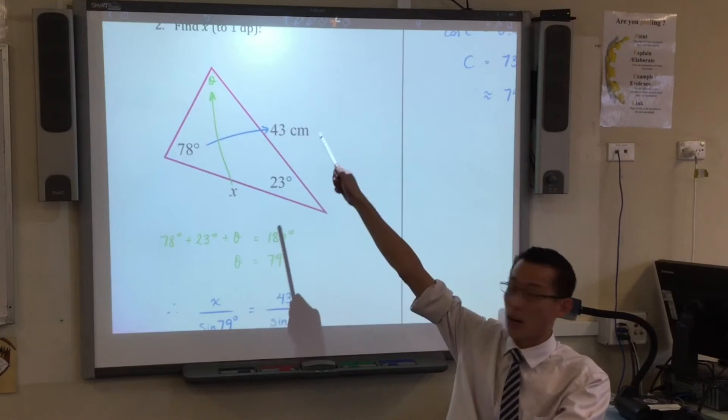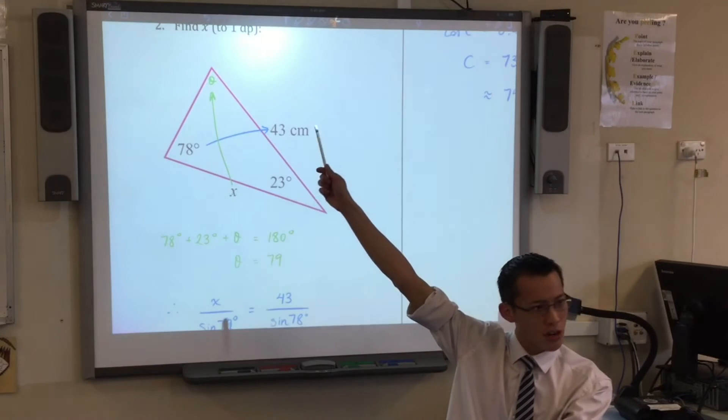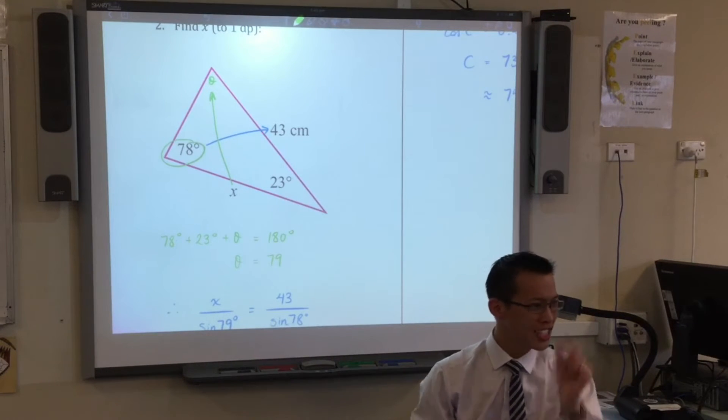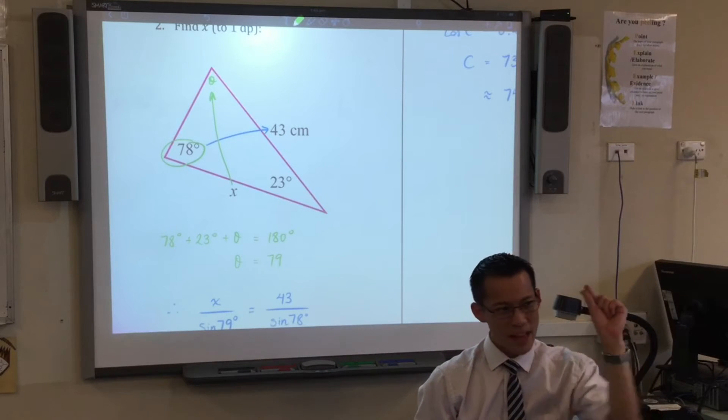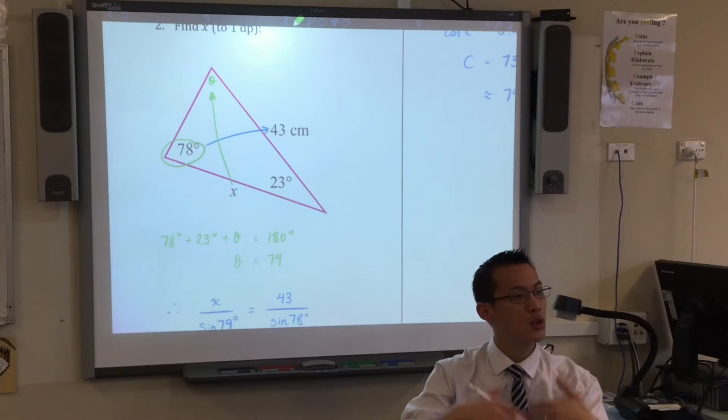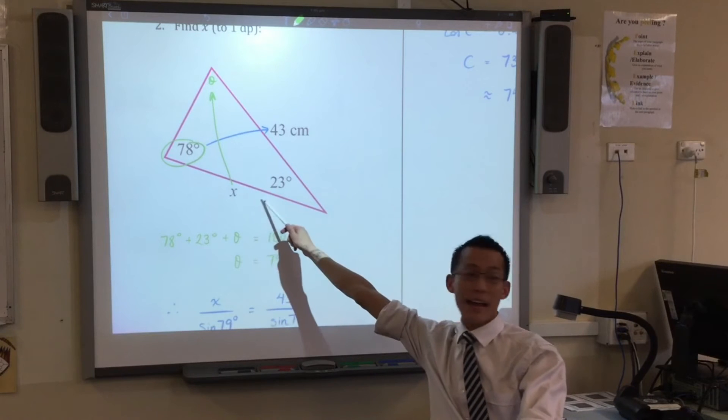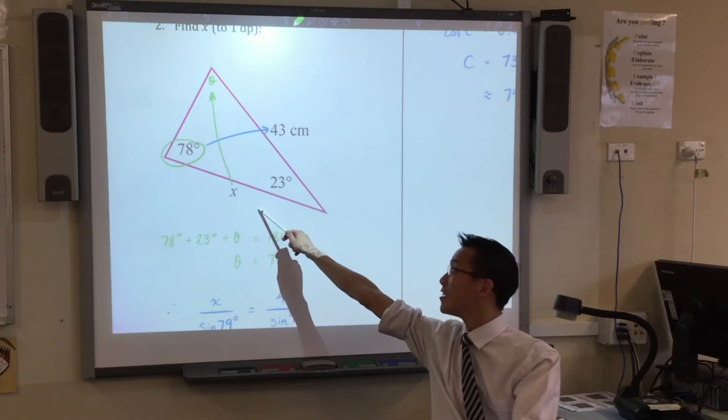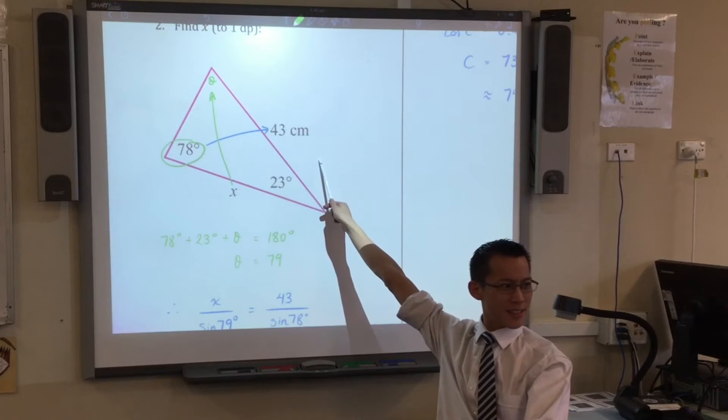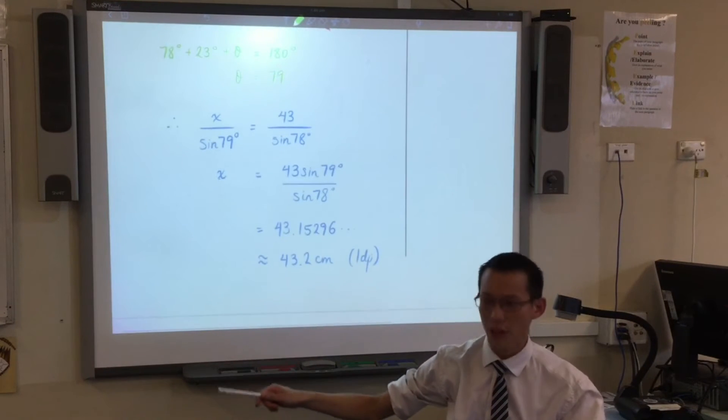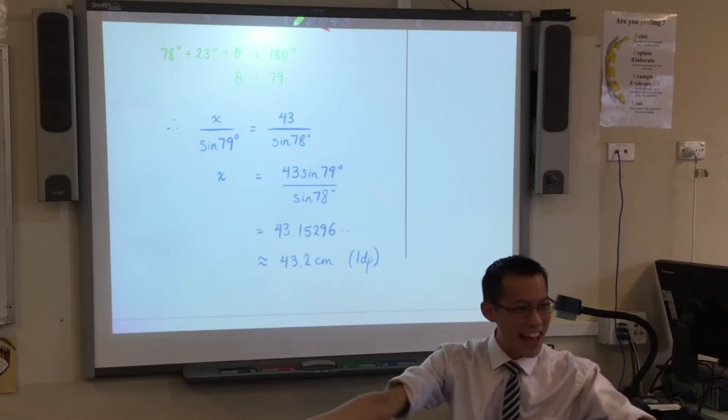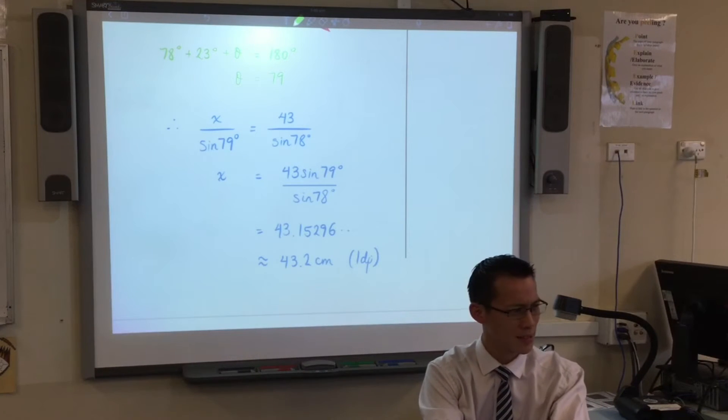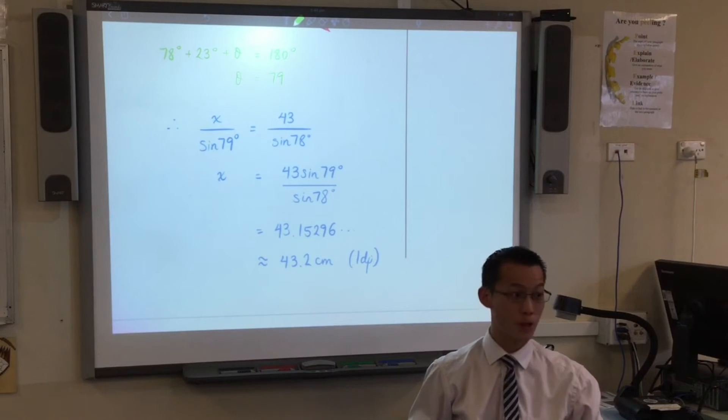If you worked out this angle up in the corner, 79 degrees, do you notice it's almost identical in size to this angle here? It's just a little bit bigger, right? That just a little bit bigger means you should expect this side here that's opposite to be just a little bit bigger than this side. Does that make sense? Which is why you're like 43.2, well, that's just a little bit bigger than the 43 that's already there. Does that make sense? 43.2.